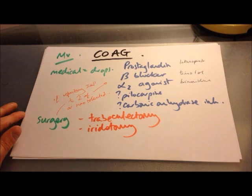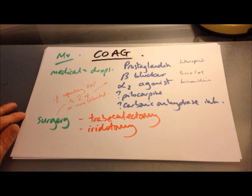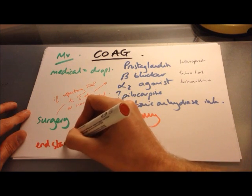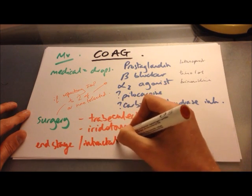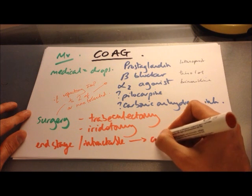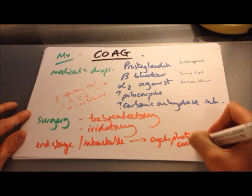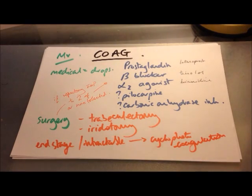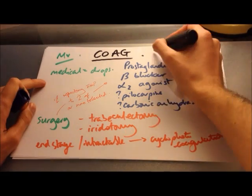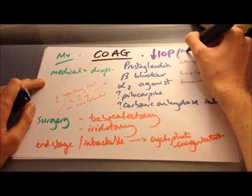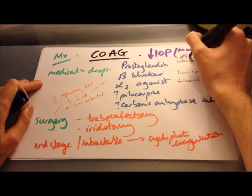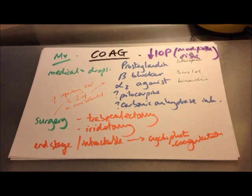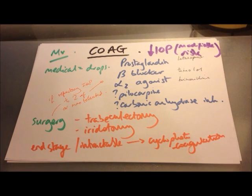For end-stage or intractable glaucoma, diode laser cyclophotocoagulation damages the ciliary bodies so that less aqueous humour is produced, lowering eye pressure. None of these treatments aim to treat the glaucoma itself — they all work by lowering intraocular pressure, which is the only modifiable risk factor for the condition.